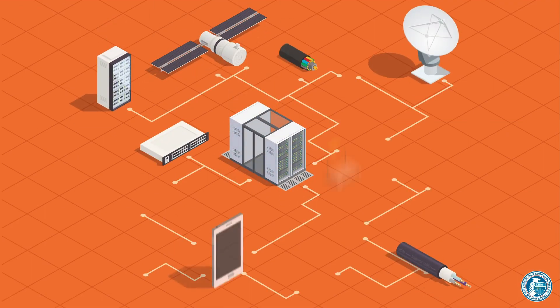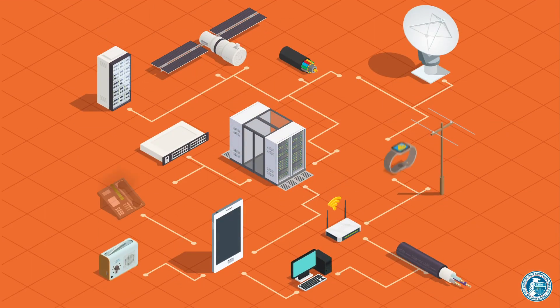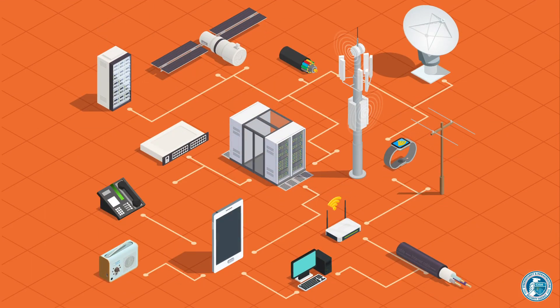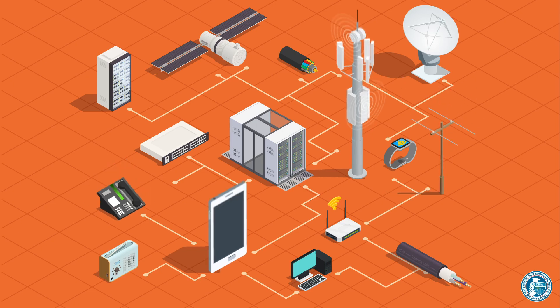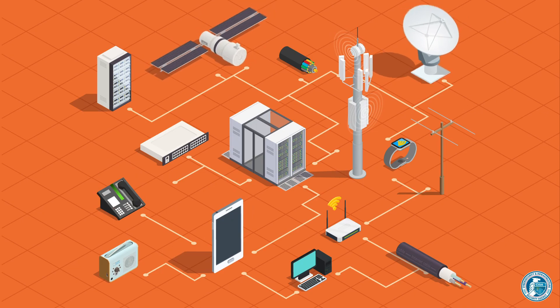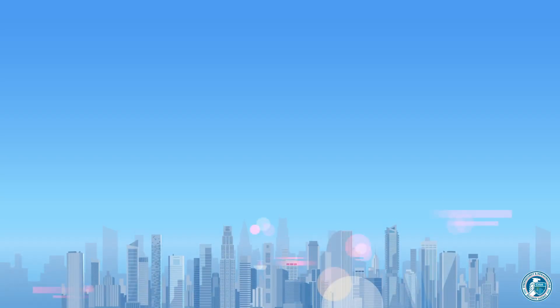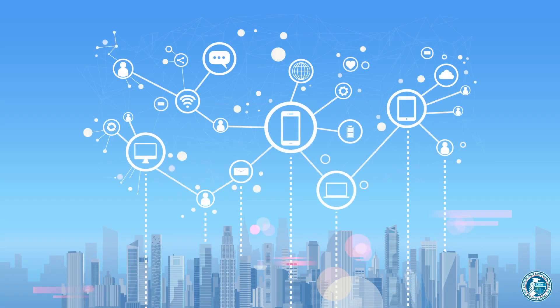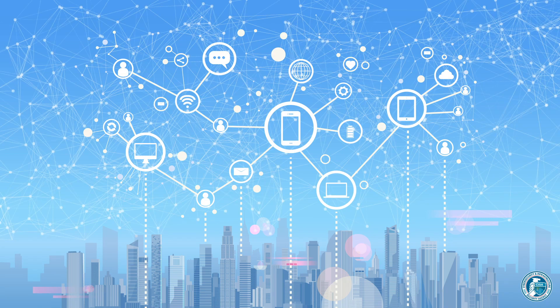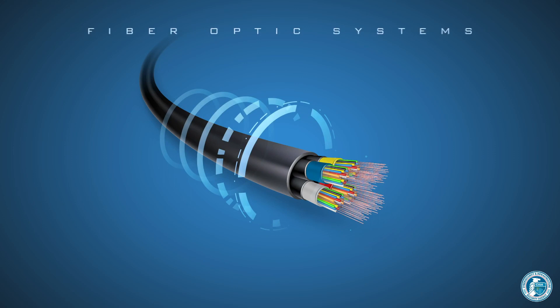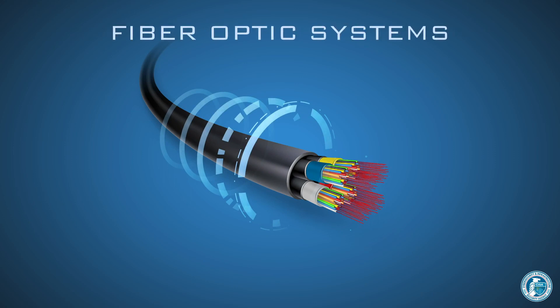The communications sector encompasses a wide range of technologies we use every day to talk with one another and access information, from telephone lines and cellular networks to broadcast signals and internet cables. These systems are both complex and highly interconnected, and it would be impossible to cover all of them in a single video. Instead, let's take a simplified look at fiber optic systems to examine both upstream dependencies as well as the systems that rely on them.